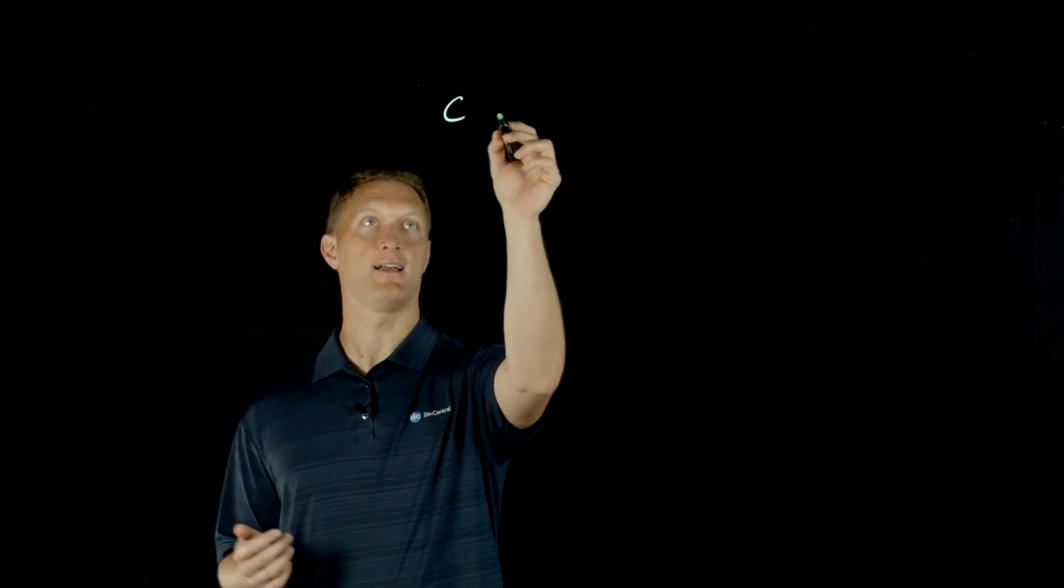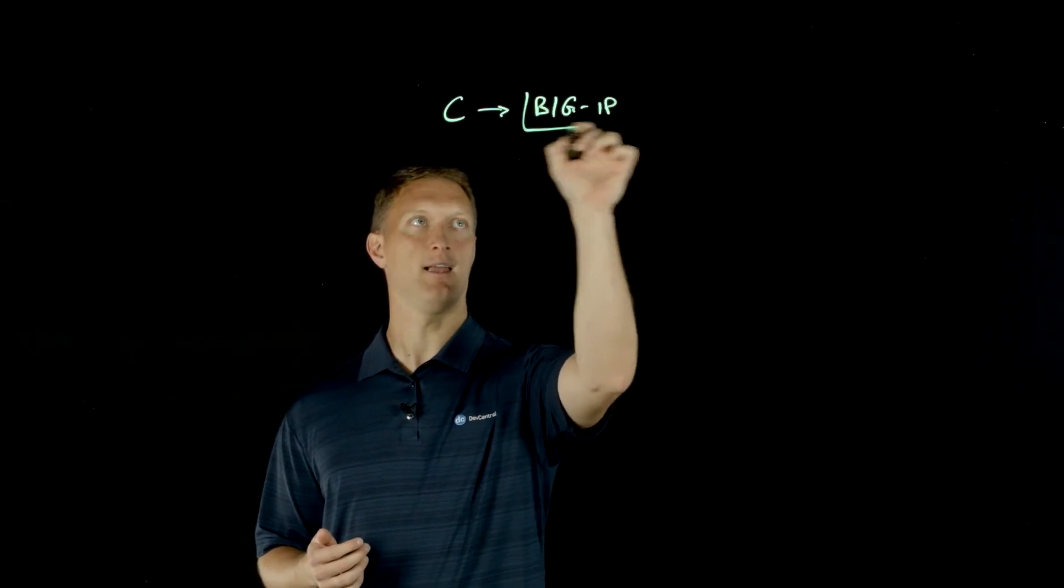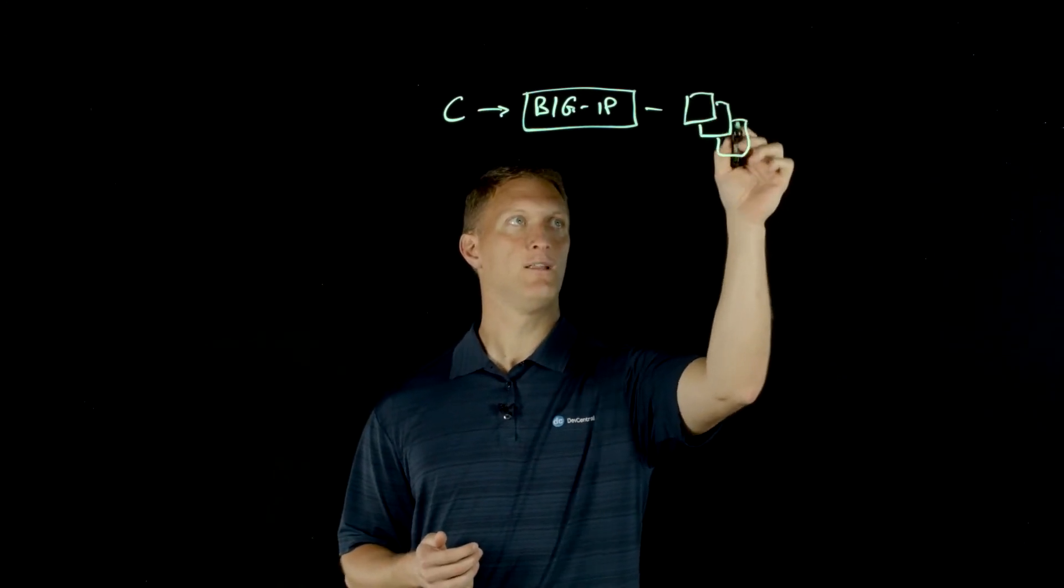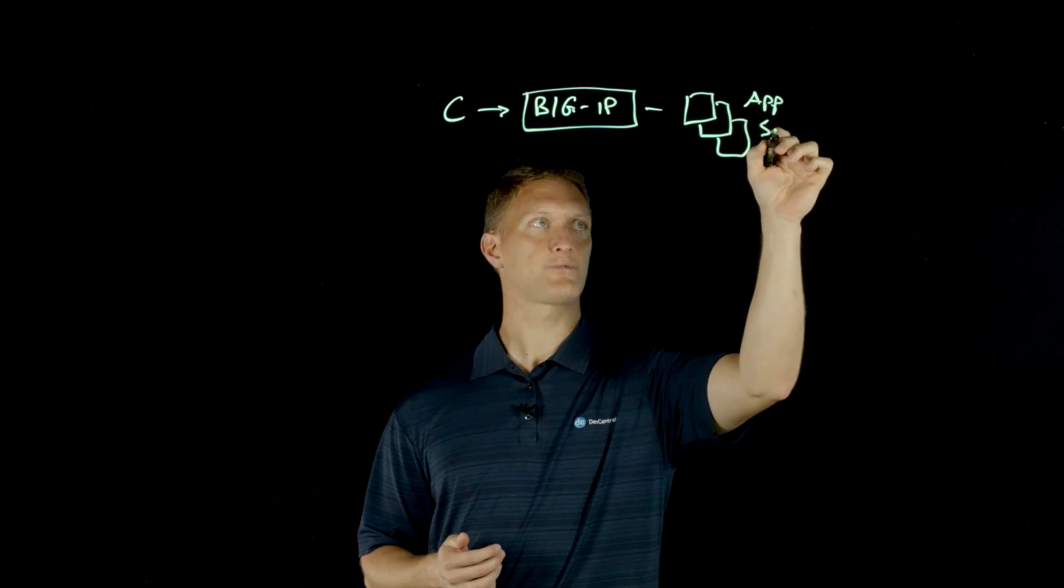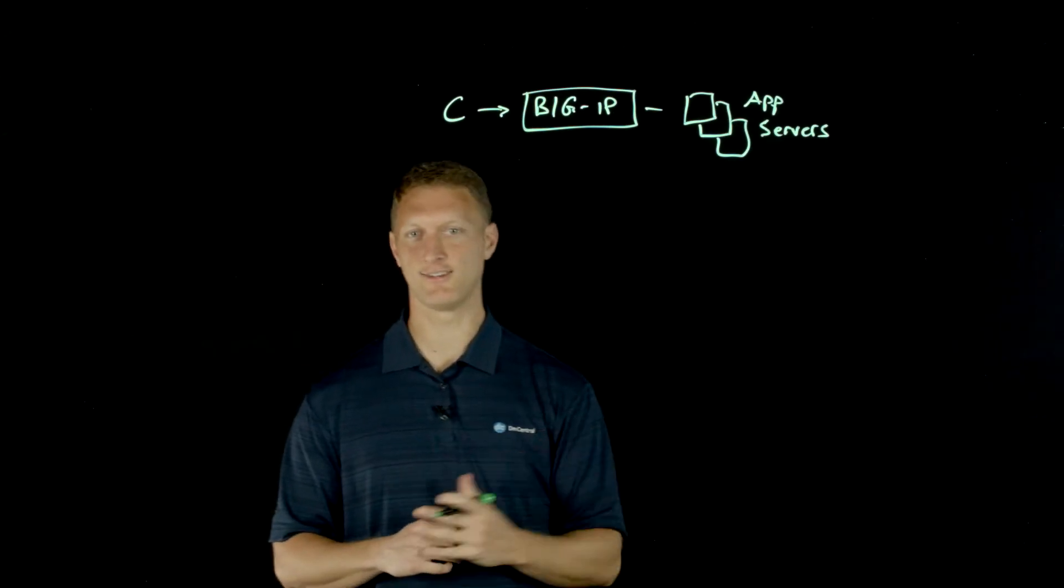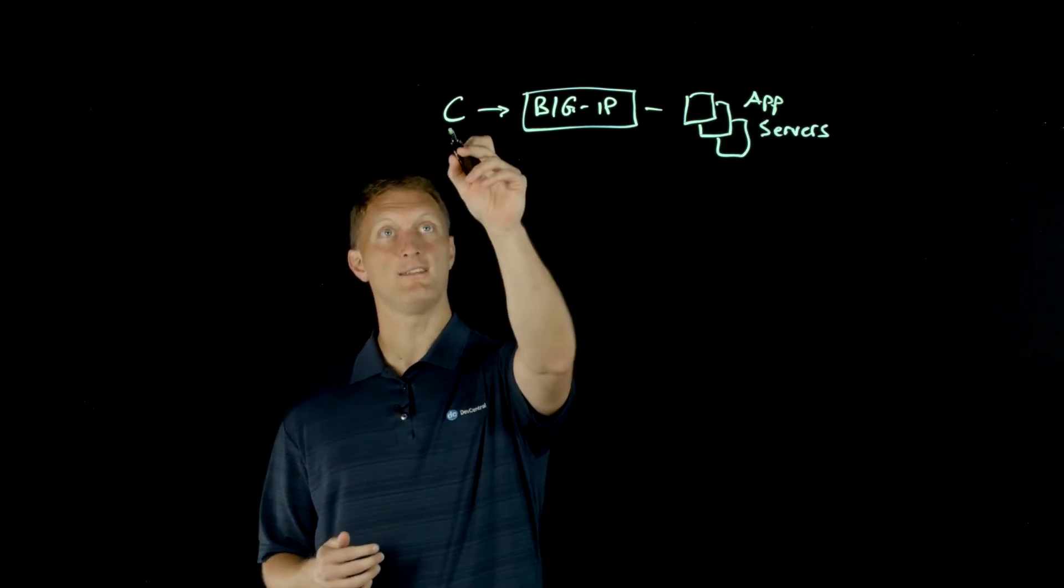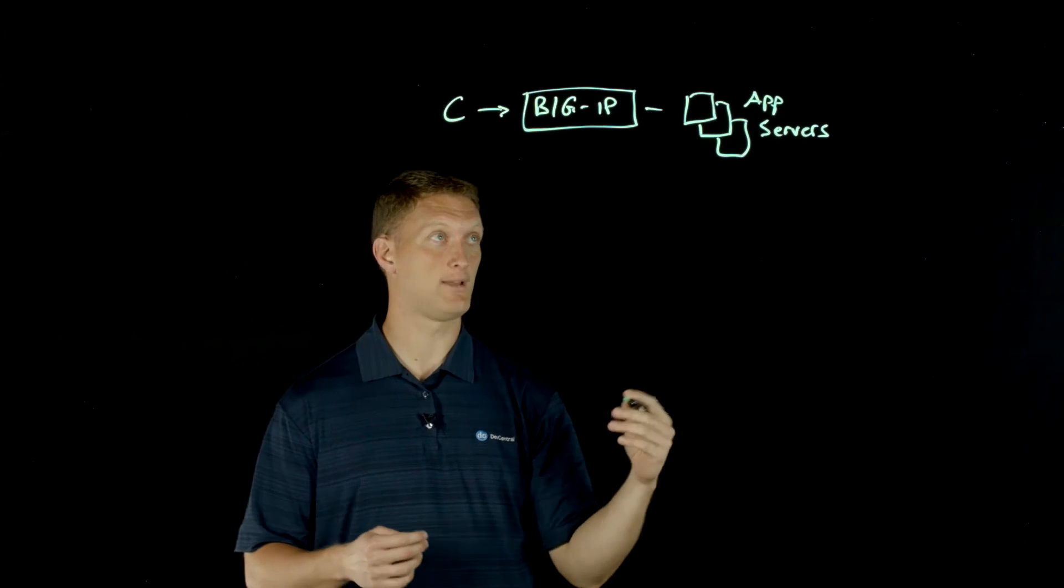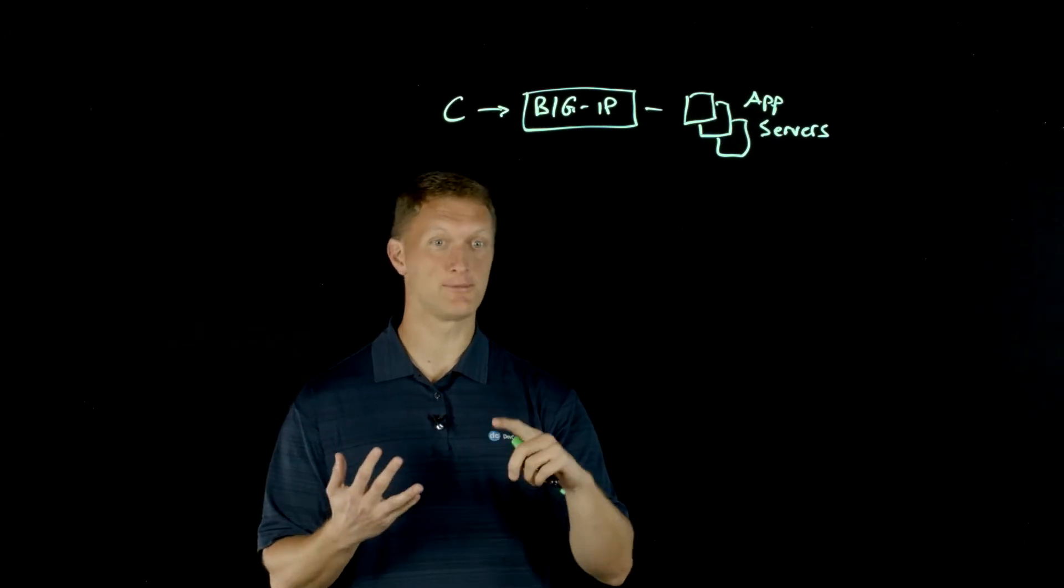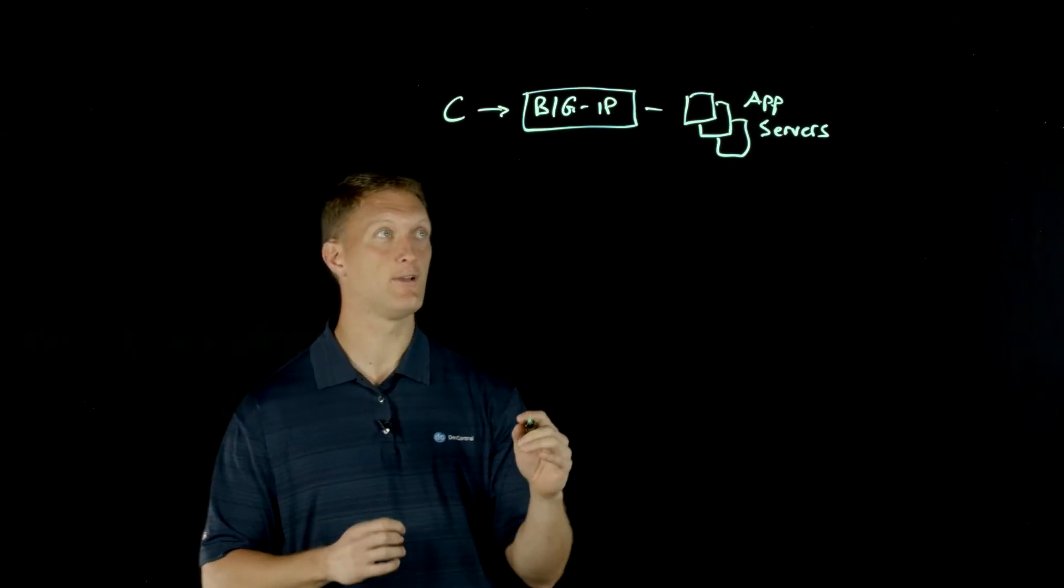Let's say you have a client or clients out there and you have a big IP deployed between those clients and your application servers back here on the back end. So I'll just draw a few of these - these are your app servers. Whenever these clients come in and they access all these applications that you provide for them, there are things like phishing attempts or malware, root kits or any number of crazy things that happen and you want to keep them all safe.